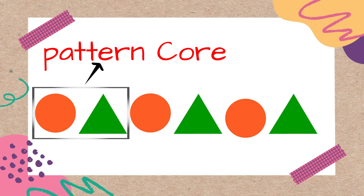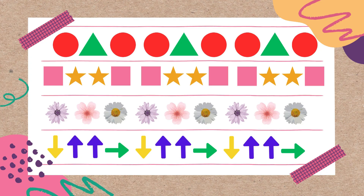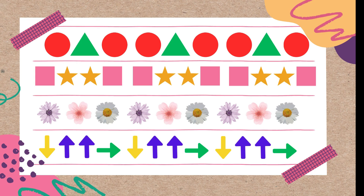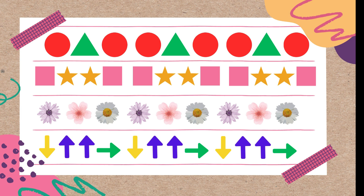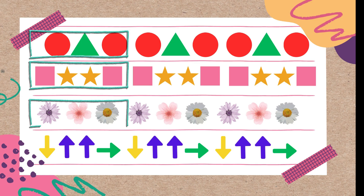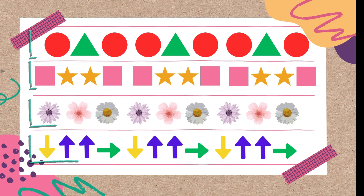Can you tell which sequence is repeating in this pattern? Red circle, green triangle — this sequence is repeating, so this is called the pattern core. But how can we identify the pattern core? When we are making a pattern, we must repeat at least two sequences to clearly recognize a repeating pattern. The first repetition just shows the base sequence, which is called the pattern core, and the second confirms the repeat, making the pattern observable.